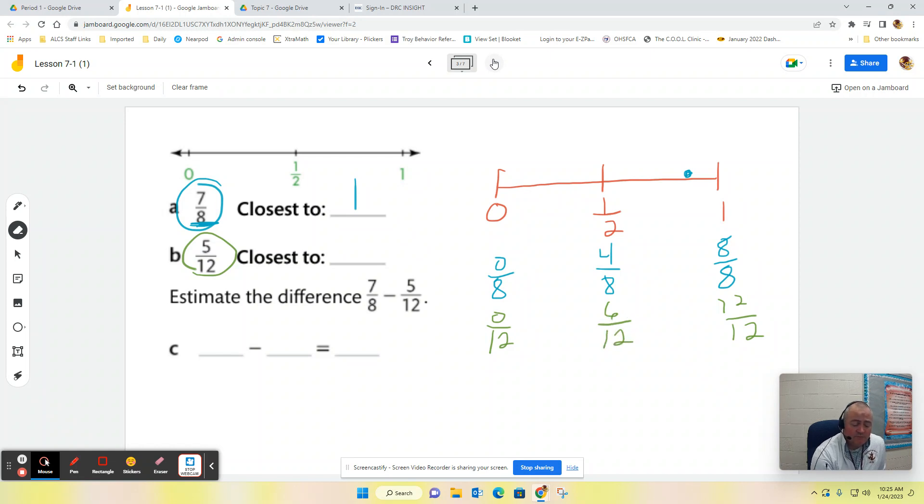And I just got to look at, well, where's 5/12? Well, 5/12 is going to be close to 6/12. So 5/12 is closer to a half than it is to zero or one. So I would say 5/12 is close to one-half.